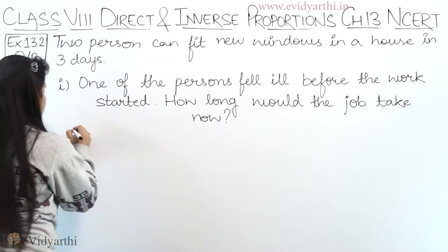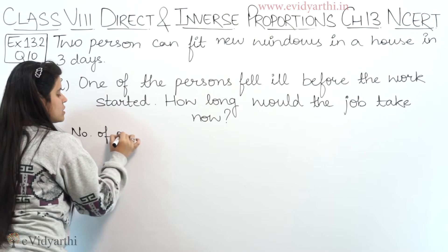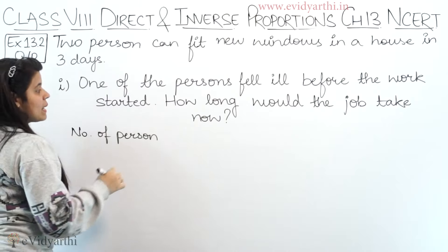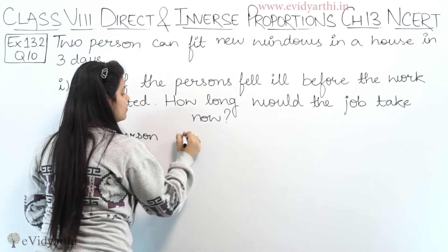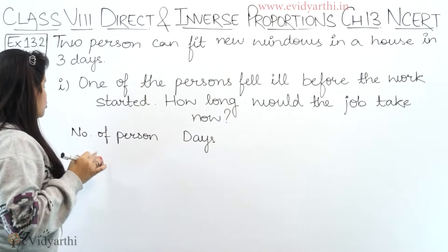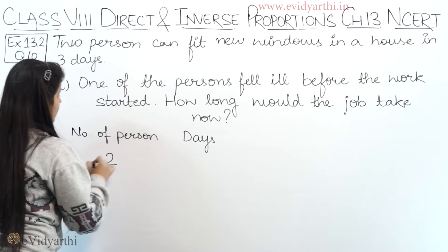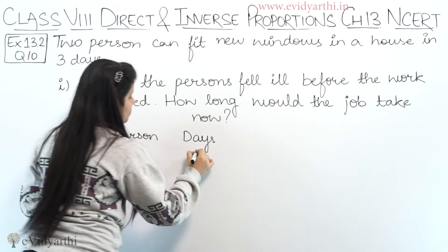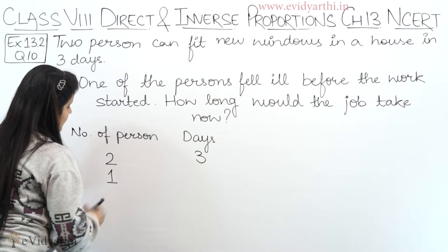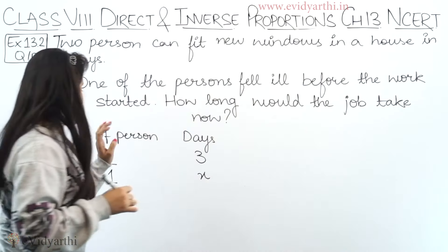So there are two things: one is the number of persons working on the work, and the next is the number of days — how much time will it take to complete the work. First it was given that if two people are working, then three days are needed. Now if one person will work, then how many days will it take?